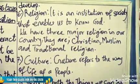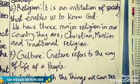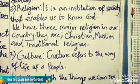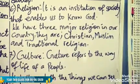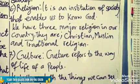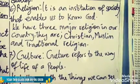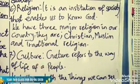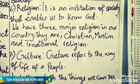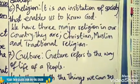The seventh dimension of civic education is our culture. Our culture refers to the way of life of a people. Without our culture, we can't know other people's way of life or their doctrines. It is through our culture that we know other people's way of life. Culture tells us both the things we can see and the things we cannot see.